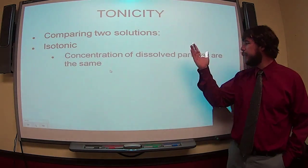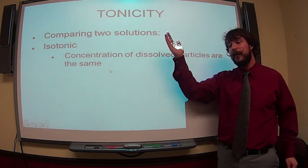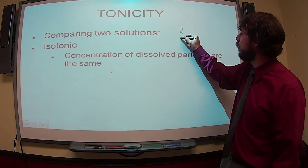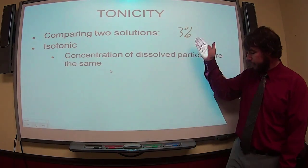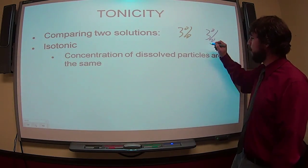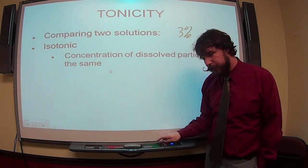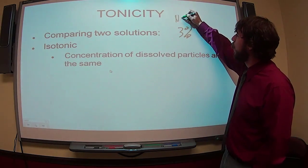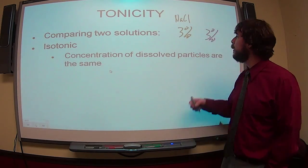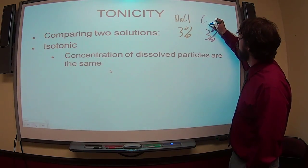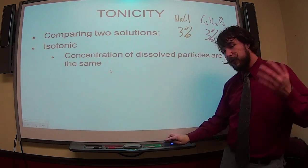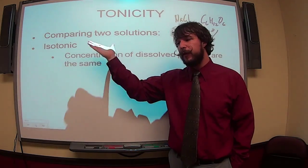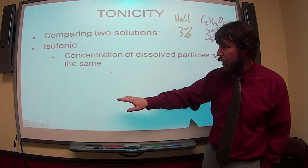So you can have a solution that is isotonic, and in an isotonic solution, the concentration of dissolved particles are the same in both solutions. So if they both had a concentration of three percent, these two solutions are isotonic. Now it could be two different solutions, this could be three percent sodium chloride, which is salt, and this could be three percent C6H12O6, which is glucose, even though they're different substances, it's in the same concentration, so we say those two solutions are isotonic to each other.